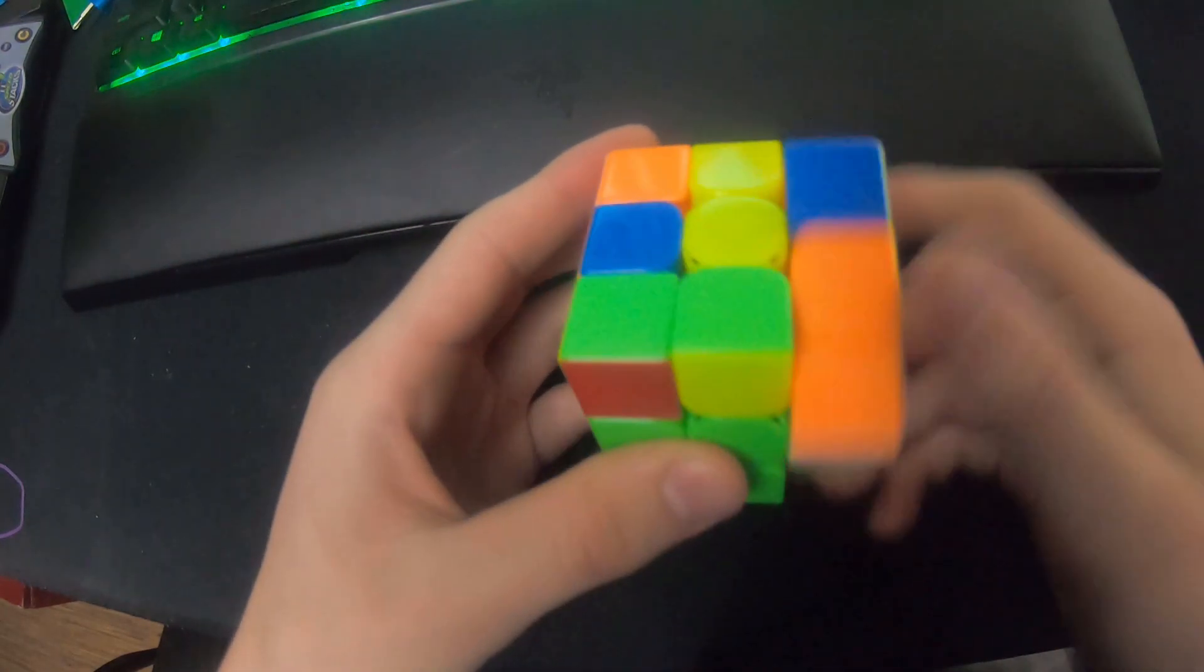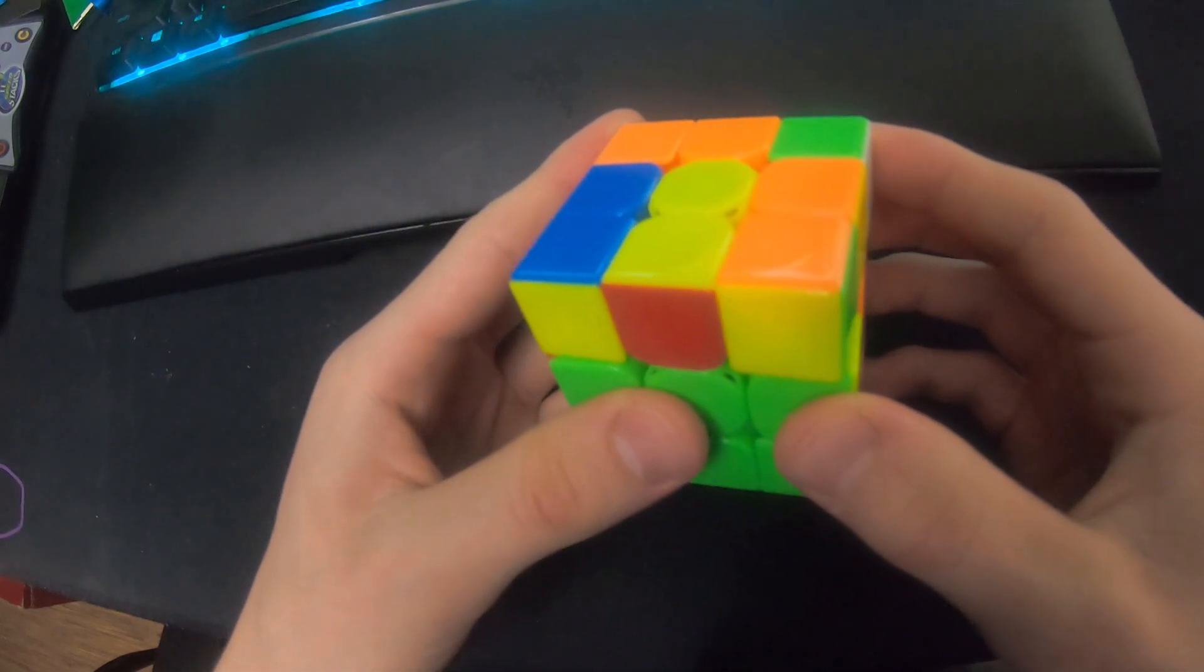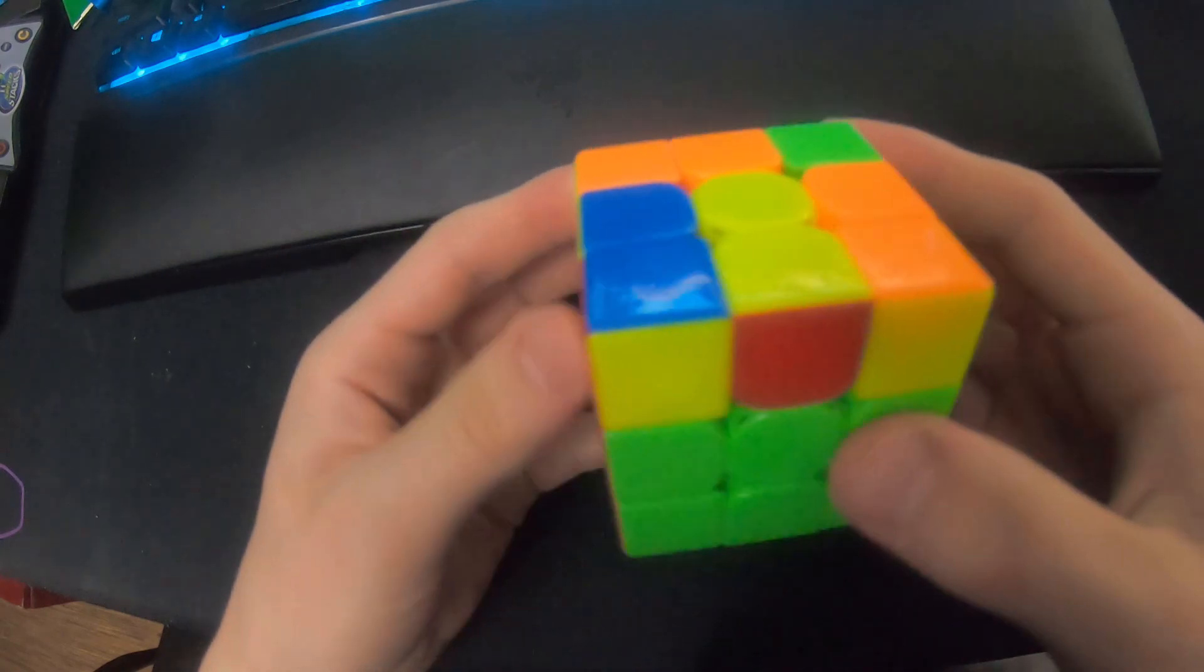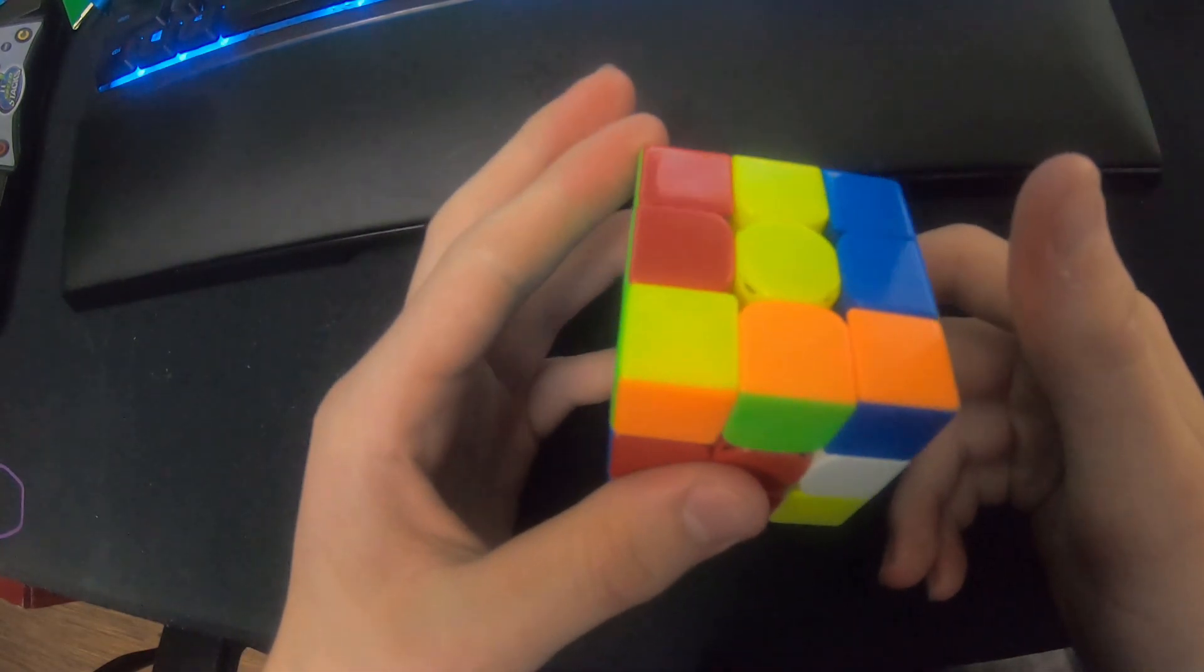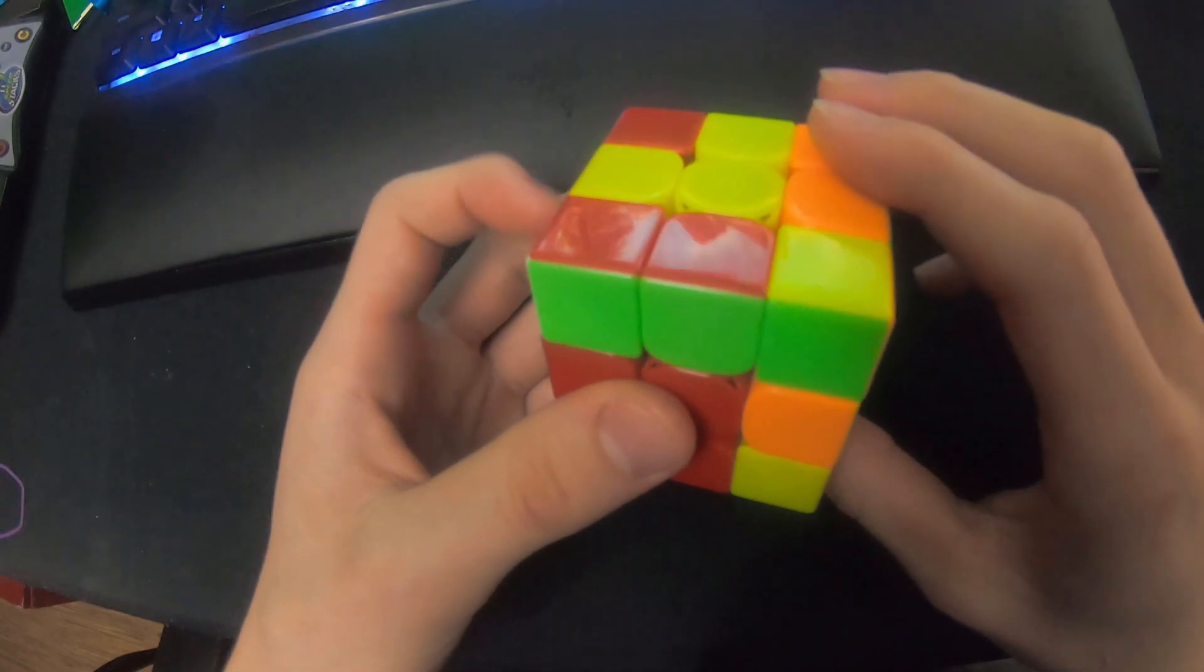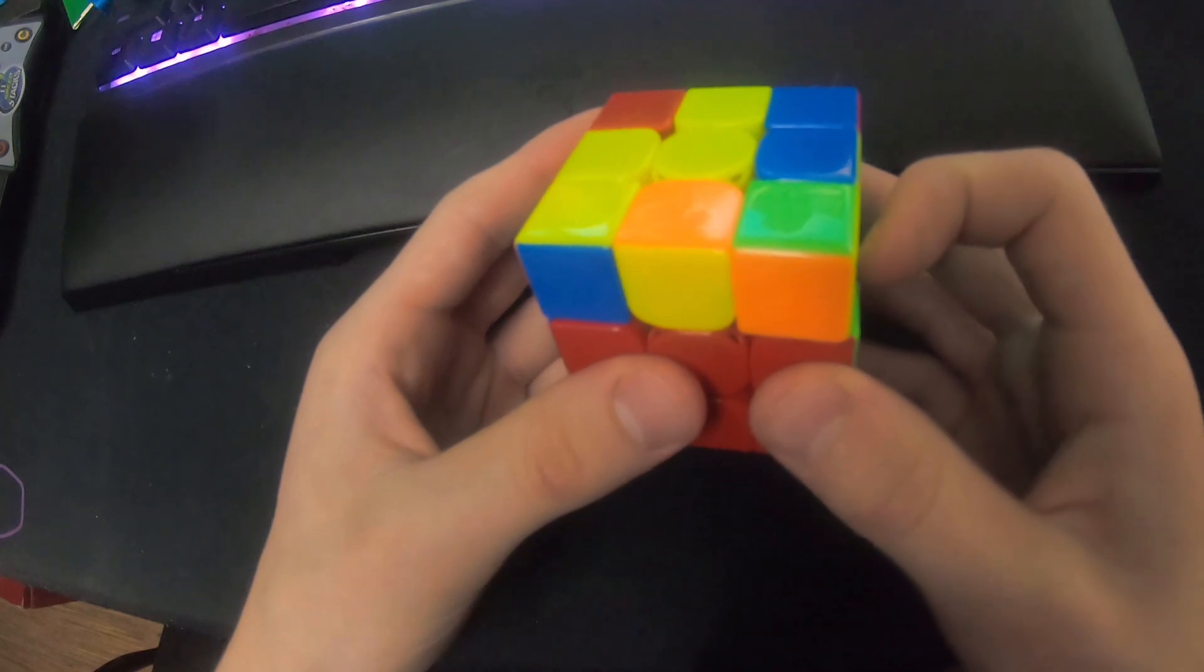For these two, I put the corner on top of the edge and solved it like this. Then for these last two, I did a D with my right thumb and solved it right here using a lefty double flick U2.